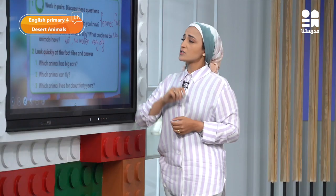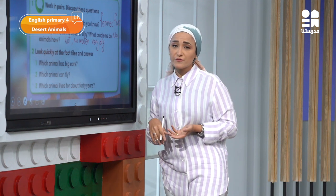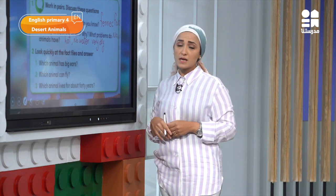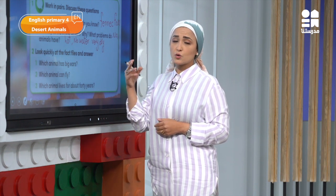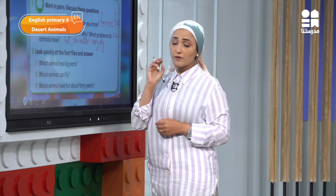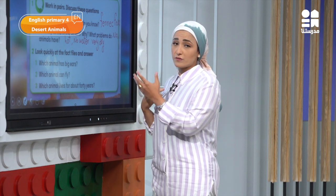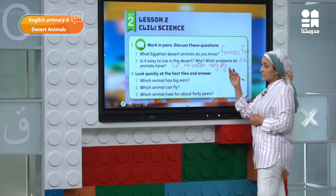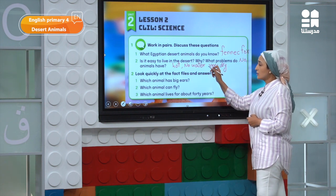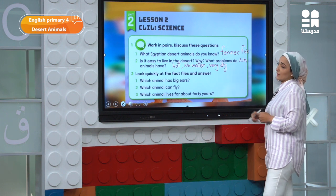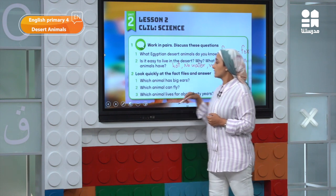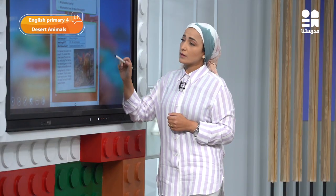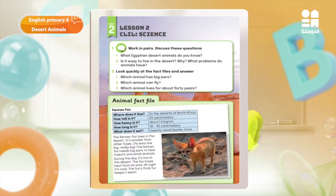What problems do animals have there? I think it's the same answers — it's very hot, no water, and it's very dry. Only a few animals can resist these conditions. Now, I want you to read the animal fact file about the fennec fox.